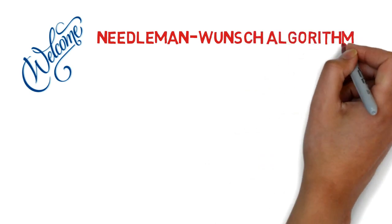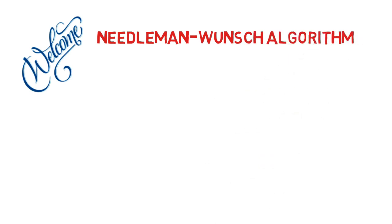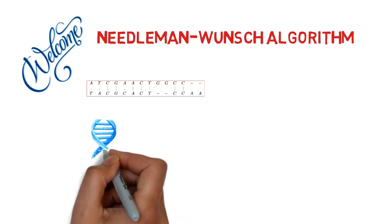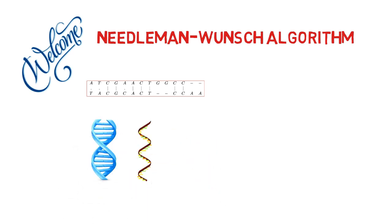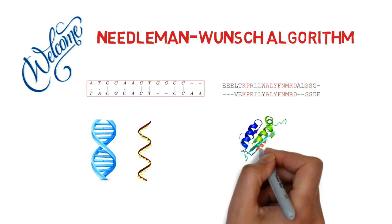Welcome back. In this video, I will discuss the Needleman-Wunsch algorithm. In bioinformatics, we generally deal with two types of sequences. The first is nucleotide sequences that belong to DNA or RNA, and the second is amino acid sequences that are building blocks of proteins.